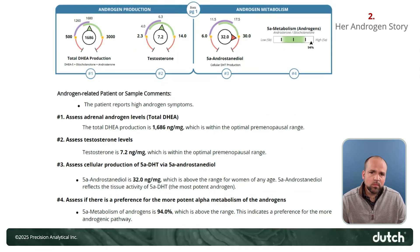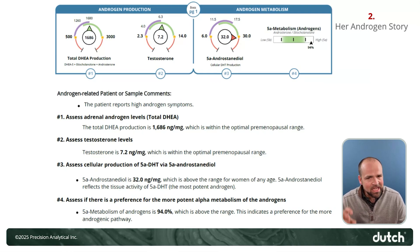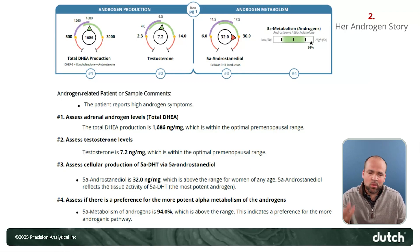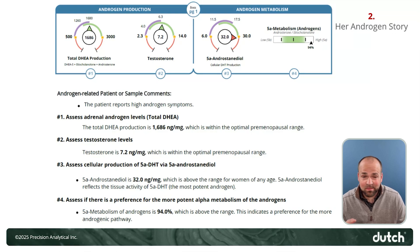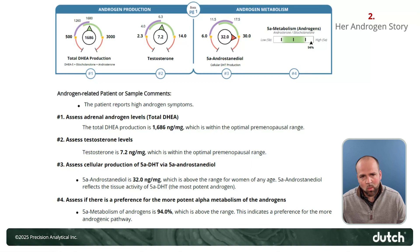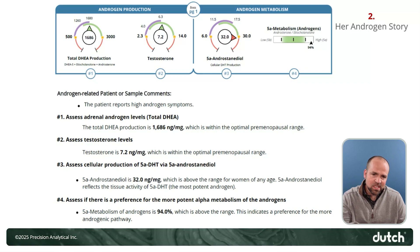Moving on to the androgen story — the same concept — looking at adrenal androgens or total DHEA production, then testosterone, five-alpha androstenediol (the intracellular DHT marker), and then the five-alpha/five-beta balance in terms of androgenic metabolism. This is a nice case highlighting someone with a lot of DHT at the tissue level. Looking to the left, the reason doesn't seem to be too much DHEA or testosterone. Looking to the right, the reason is that their androgens are all going heavily down the five-alpha pathway, making lots of DHT in the tissue, resulting in high five-alpha androstenediol.